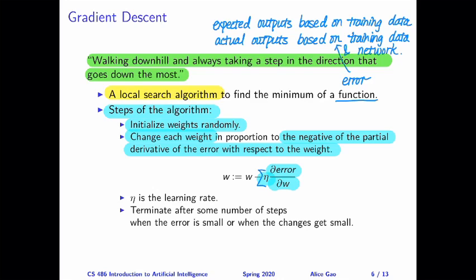Just to reiterate, for each training example, and for each weight, we are going to calculate the partial derivative of the error with respect to the weight, multiply that by the learning rate eta, and then we'll add together this quantity for all of the training examples. And the sum will be how much we're going to decrease that weight by.